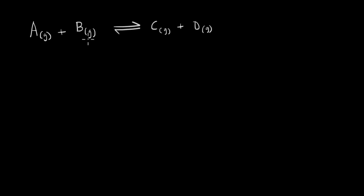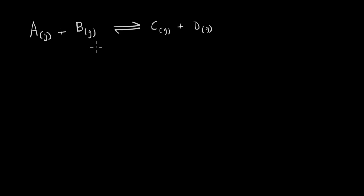Let's take a hypothetical reaction where A and B react to give C and D, and let's assume all of them are gases. For this reaction, what we want to know is: what happens to the equilibrium when a catalyst is introduced? Does the equilibrium shift towards the reactants or the products, or does it not change?